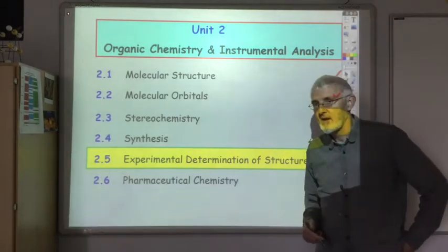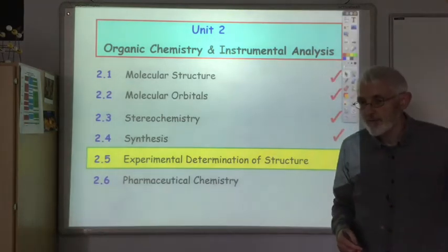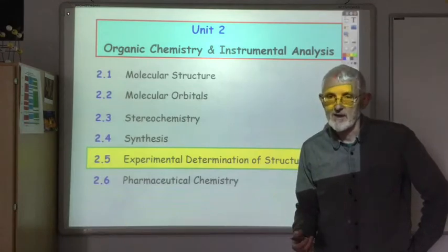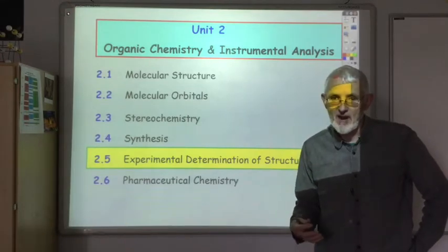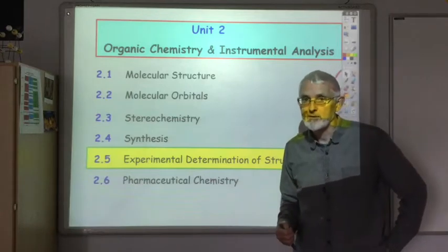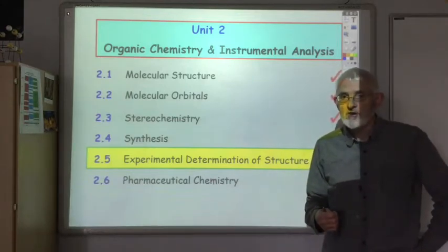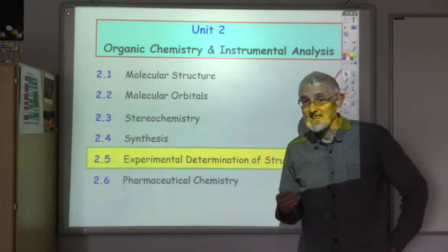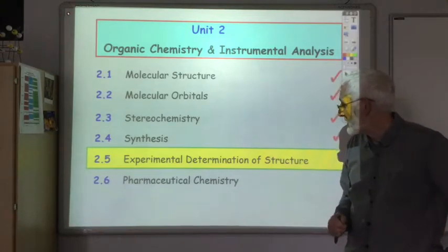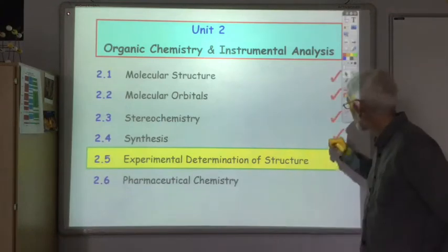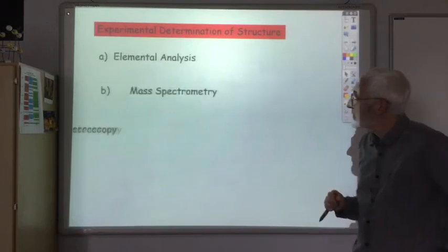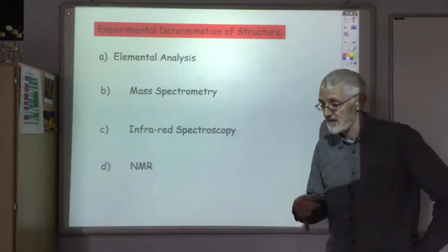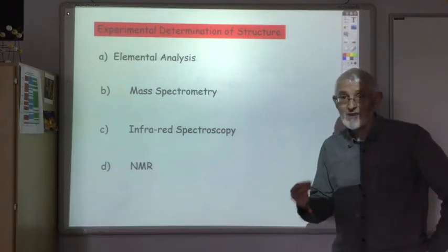As you might have noticed in the organic synthesis experiments you've done so far, very often in organic chemistry you end up with a white powder or a colourless liquid. There's not a huge amount of colour or variety in the looks of these organic compounds. So the question is: how do we find out definitively what the structure of the compound we made is? And that's the question we're going to answer by looking at the experimental determination of structure, which will allow us to take a white powder and actually find out what the structure of the compound is.